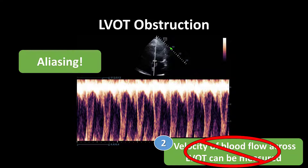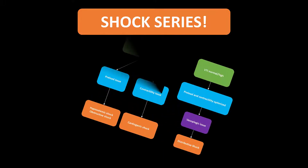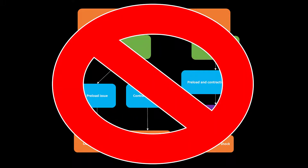Acquisition errors and dynamic LVOT obstructions make up most of the common pitfalls we see with VTI acquisition. We still have a few more pitfalls to get through before we can move on to using LVOT VTI to determine different types of shock.